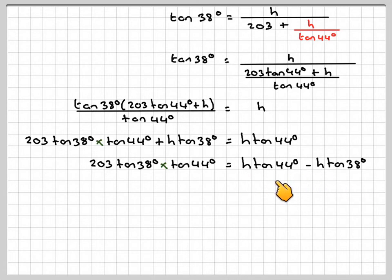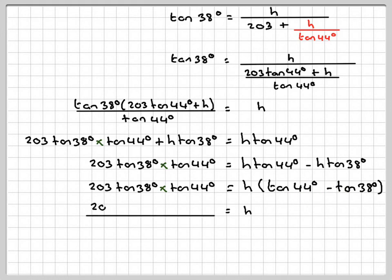There's a common factor here of h, so we can now take it out. We've only got one h now. So 203 tan 38 times tan 44 is equal to h times tan 44 minus tan 38. This is multiplied, so all we need to do is divide. So h is going to be 203 tan 38 times tan 44 over tan 44 minus tan 38.